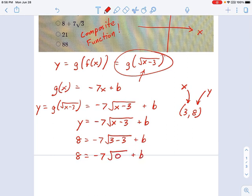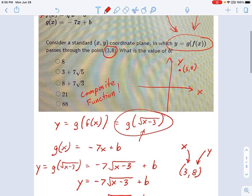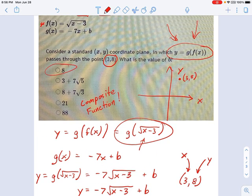So I'm going to say 8 equals negative 7 times the square root of 0 plus b. And the square root of 0, you should know that, it's 0. And 0 times 7 is 0. So what we get, this whole thing crosses out, is just 8 equals b. So that's our answer. You can see that as one of the selections right here.